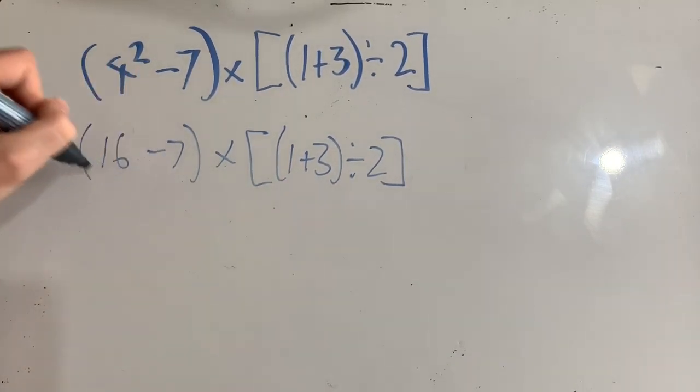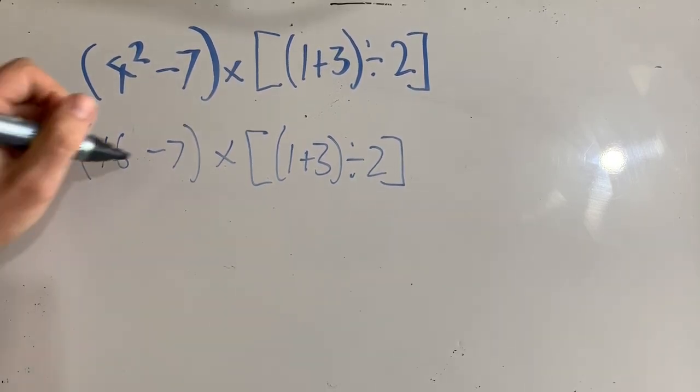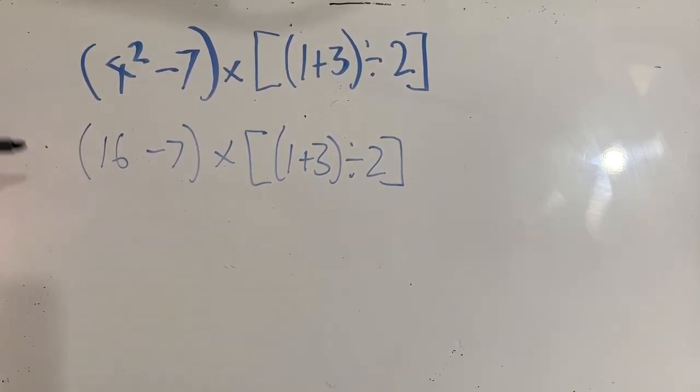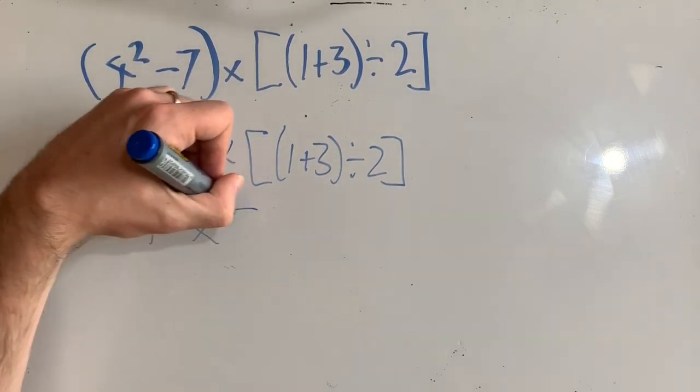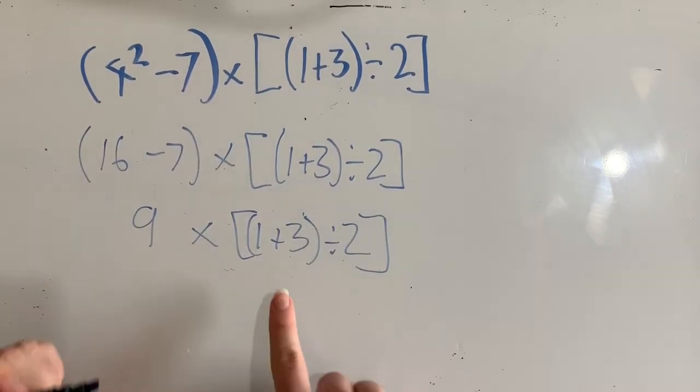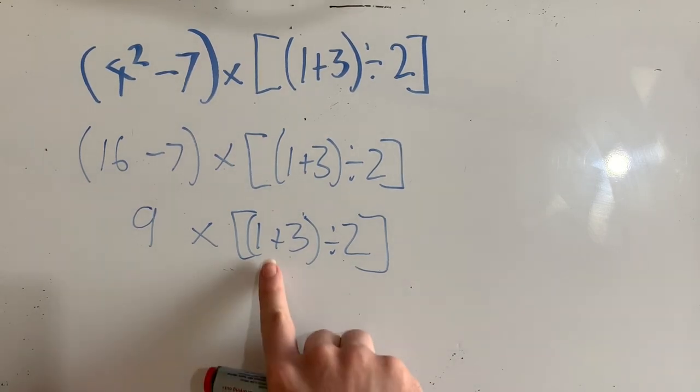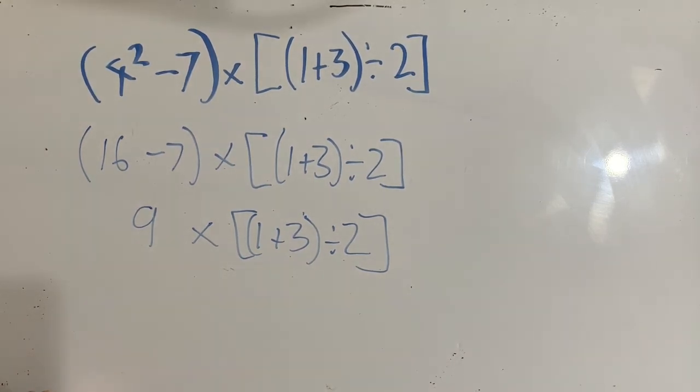And next step, I'm going to solve this bracket here. So I've got 16 minus 7, and I actually will get rid of my parentheses or my brackets here. 16 minus 7 is 9 times this here. Now I can work on this one. I want to find out what my innermost bracket is first. So I'm going to rewrite my 9 there.